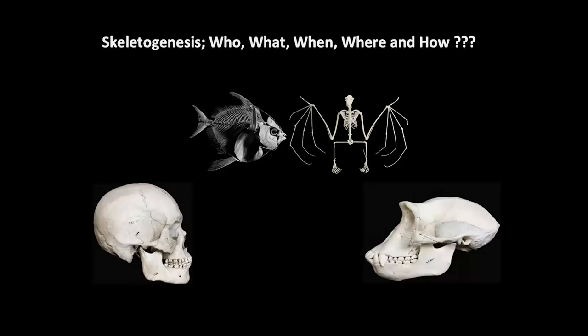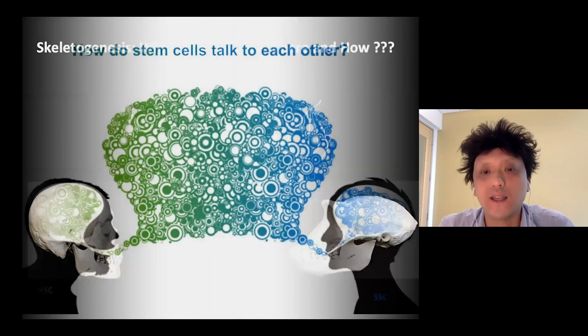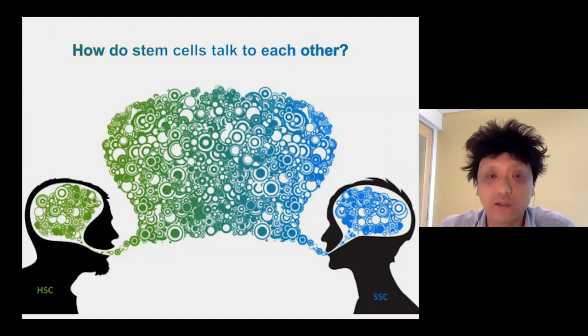As organisms and vertebrates grow, the overall skeleton also changes in terms of its shape. One of the challenges we are trying to address is how we stay in our optimum state — at least keeping the skeleton functioning the way it's supposed to in our prime. The skeleton is a very complex and interesting tissue, and we're still trying to understand the types of genes involved, when they are activated, and how the overall process of skeletal genesis is programmed and controlled at the single cell level.